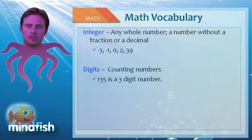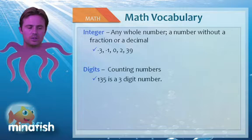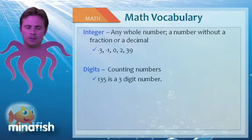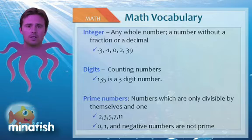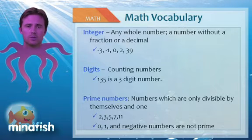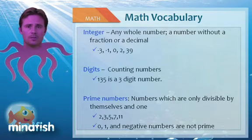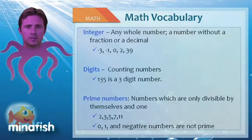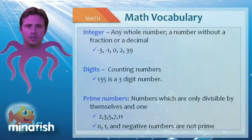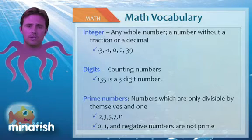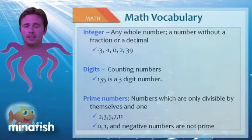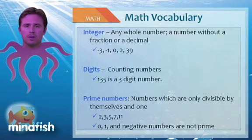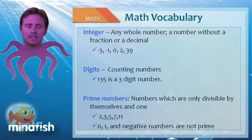Digits is a simple term used to describe how many numbers you see. 135 is a three-digit number. Prime numbers can be divided only by themselves and 1. Remember, negative numbers are not prime, 0 is not prime, and 1 is not prime. The smallest prime number is 2, and from there we go to 3, 5, 7, 11, 13, 17, and 19. You want to be familiar with prime numbers up to about 19.